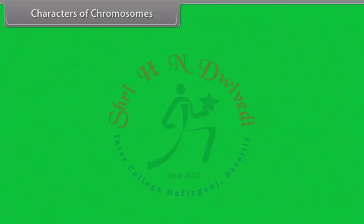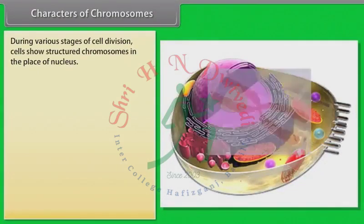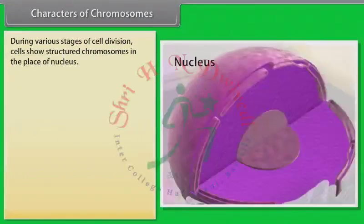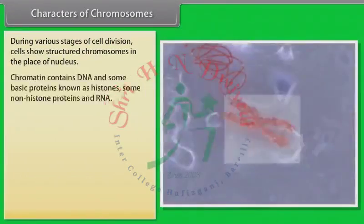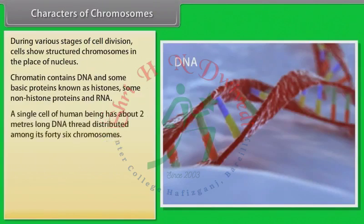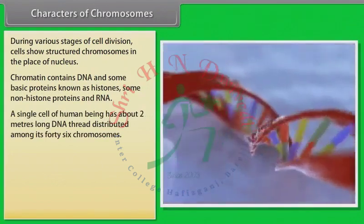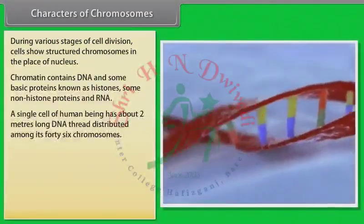Characters of chromosomes. During various stages of cell division, cells show structured chromosomes in place of the nucleus. Chromatin contains DNA and some basic proteins known as histones, some non-histone proteins, and RNA. A single cell of a human being has about 2 meters of long DNA thread distributed among its 46 chromosomes.